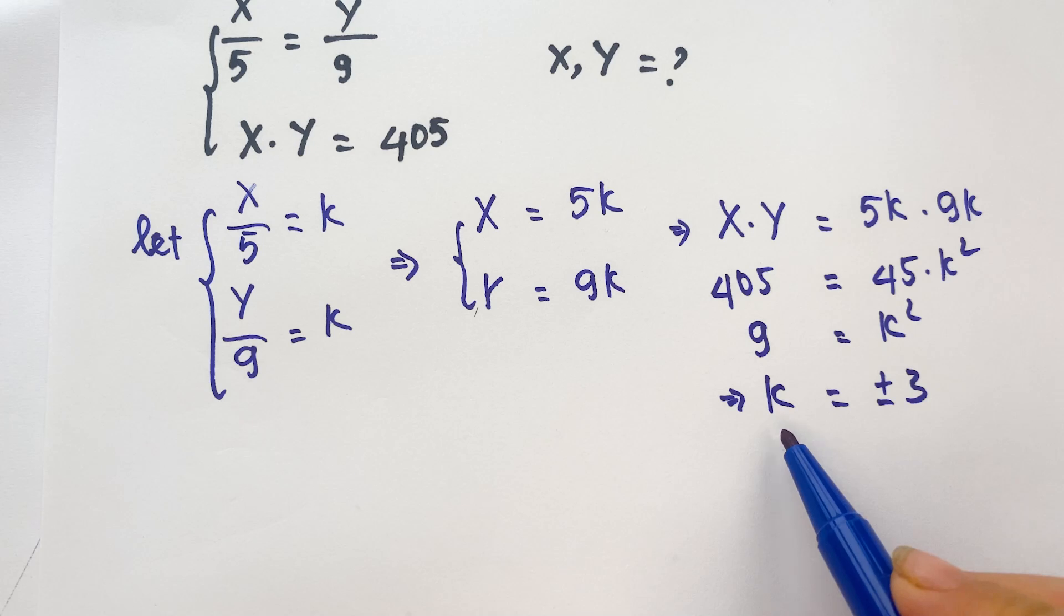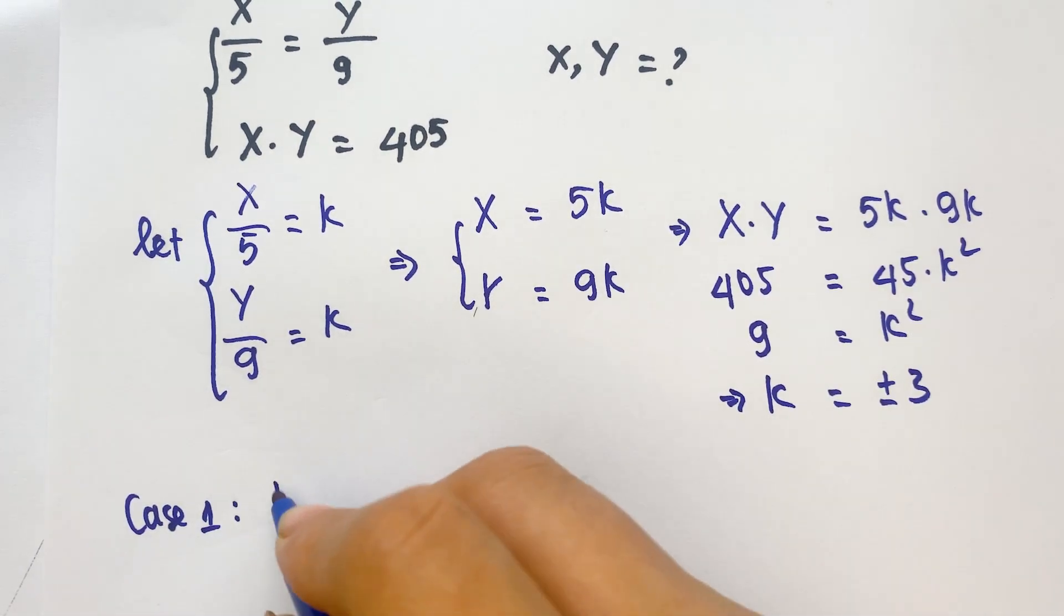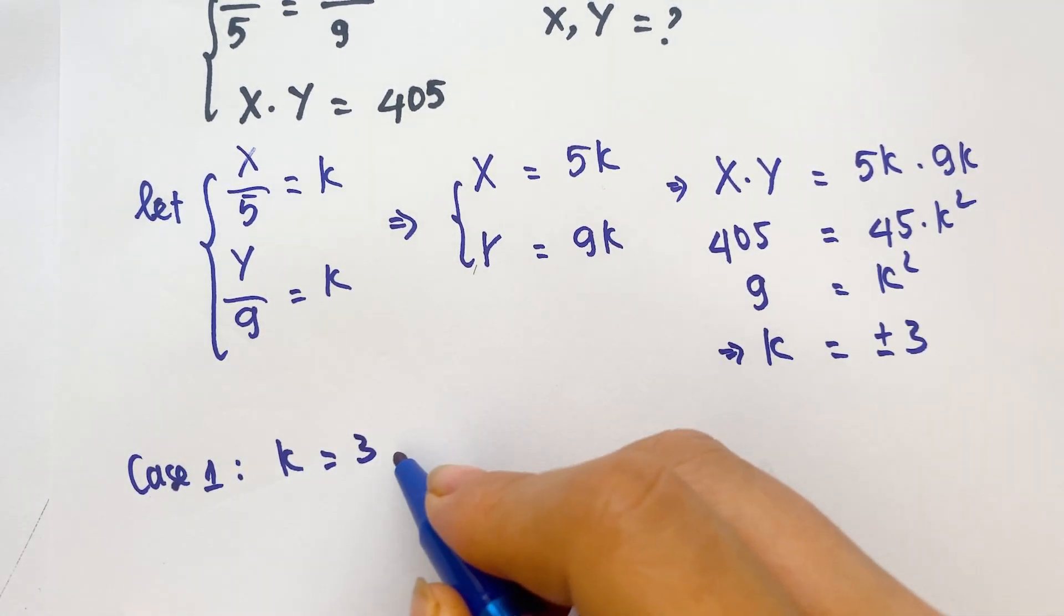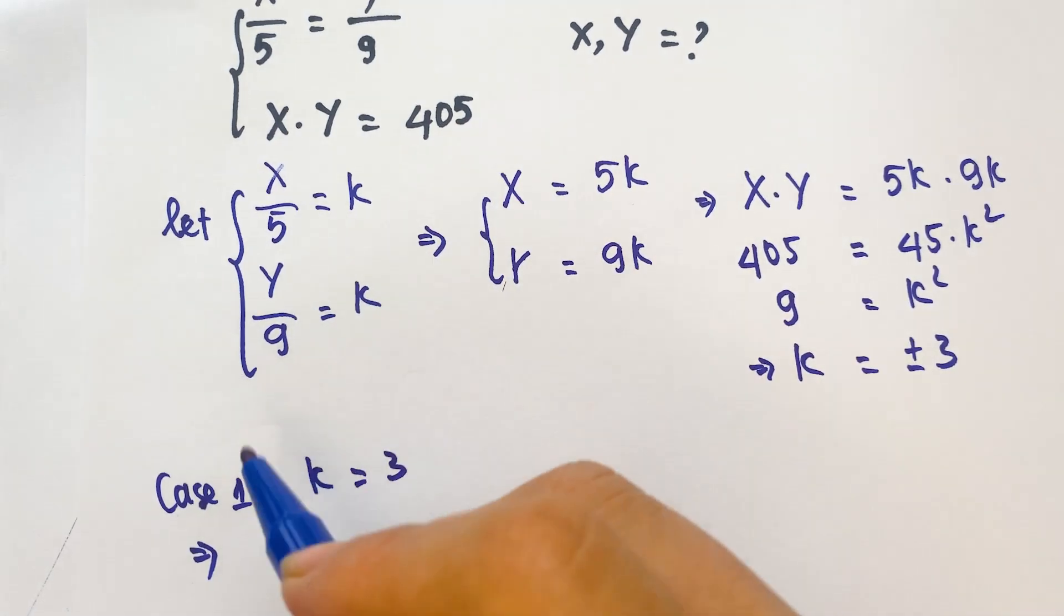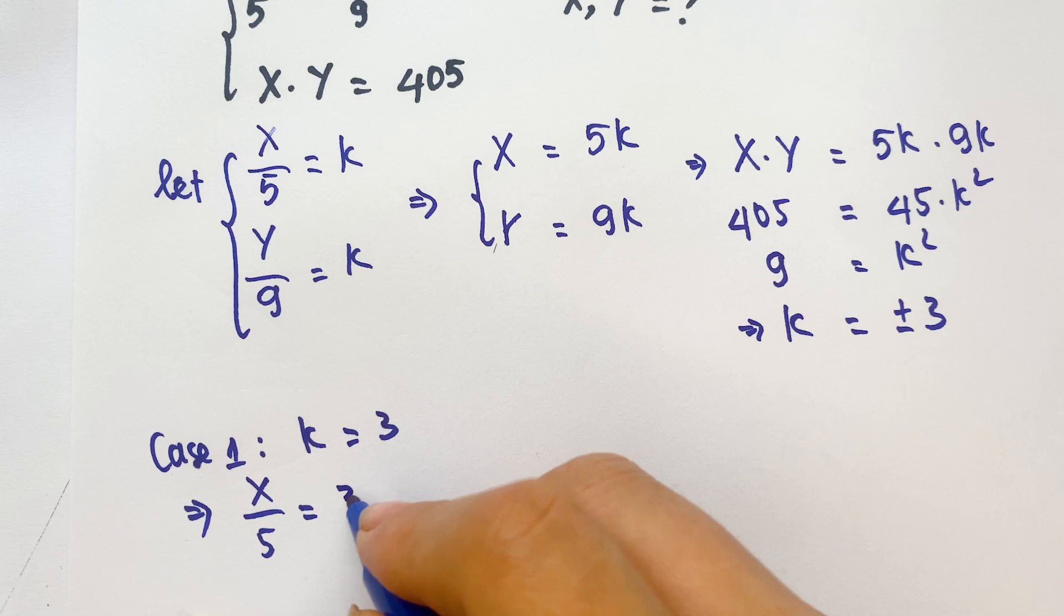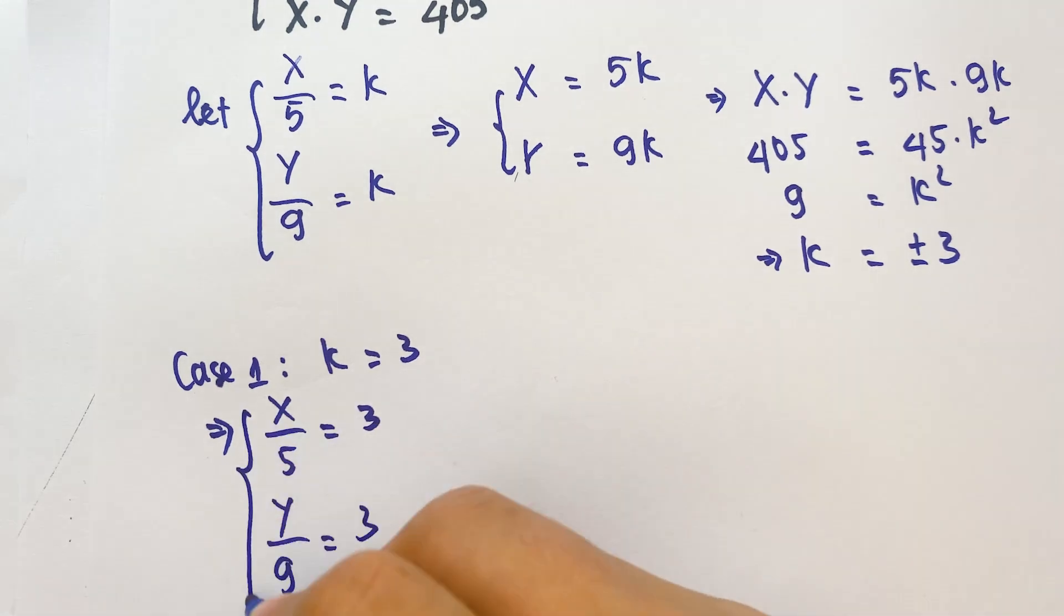And so, with k, firstly, case 1: k equals 3. We can have x over 5 equals 3, and y over 9 equals 3.